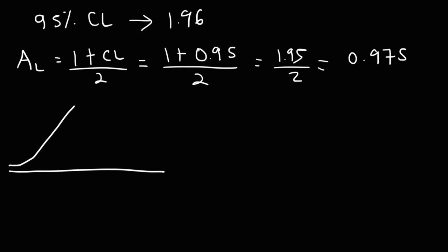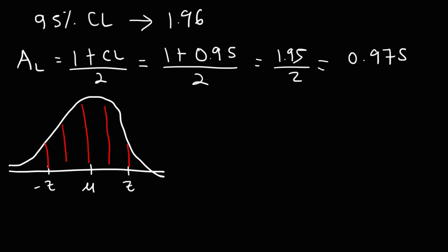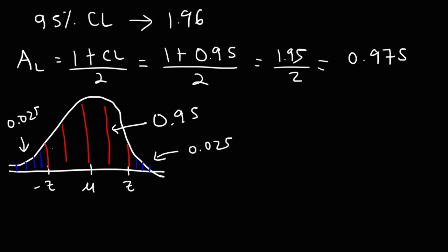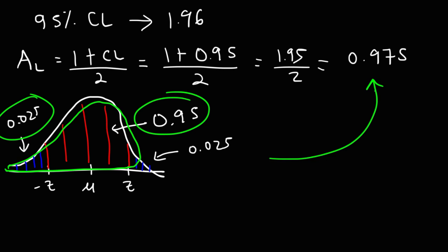Let me give you a visual illustration of this. Let's say this is the mean, this is a positive z-score, and this is our negative z-score. Between negative z and positive z, the area of this region is based on the confidence level, which is 95%, so this area is 0.95. The other 5% is covered by the area highlighted in blue, divided into two parts: 2.5% or 0.025 on the right and 0.025 on the left. So the entire area from the left up to positive z is 0.95 plus 0.025, which works out to be 0.975.